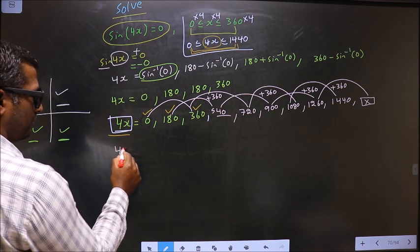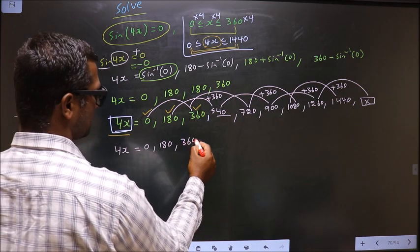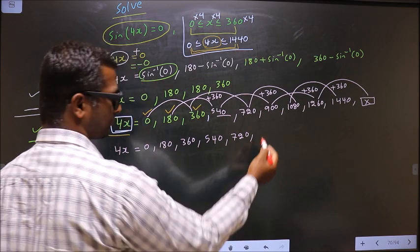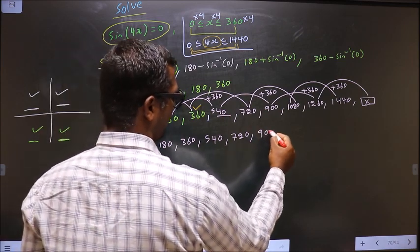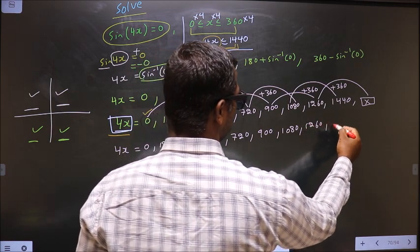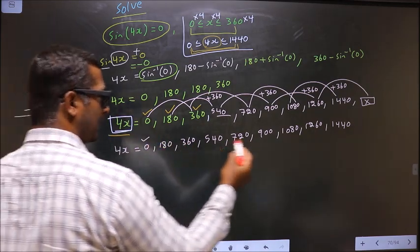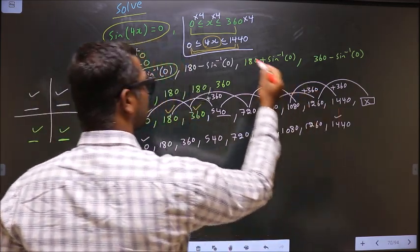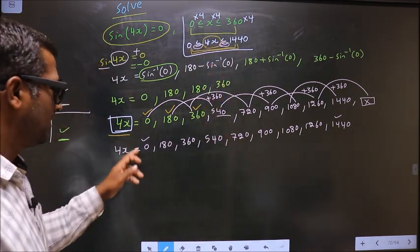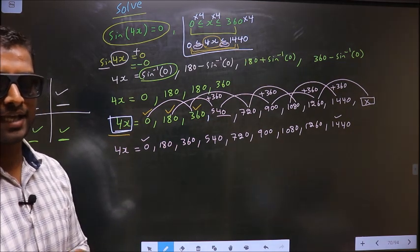So the values obtained for 4x are: 0, 180, 360, 540, 720, 900, 1080, 1260, and 1440. Note that for 0 and 1440, there is an equal-to symbol in the interval boundary, meaning these two values can be included — that is why both boundary values are accepted.